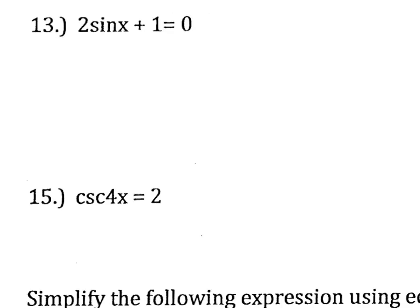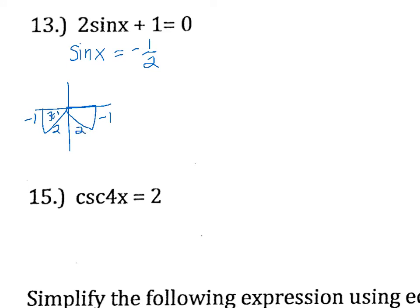For number 13, we want to first subtract 1 and then divide by 2, so we have sine x equals negative 1 half. We just need to find where sine equals negative 1 half. Sine is negative in the third and fourth quadrants. The opposite side would be negative 1 and the hypotenuse is 2, so we know we must be dealing with a 30 degree angle. Our two answers are 7 pi over 6 and 11 pi over 6.